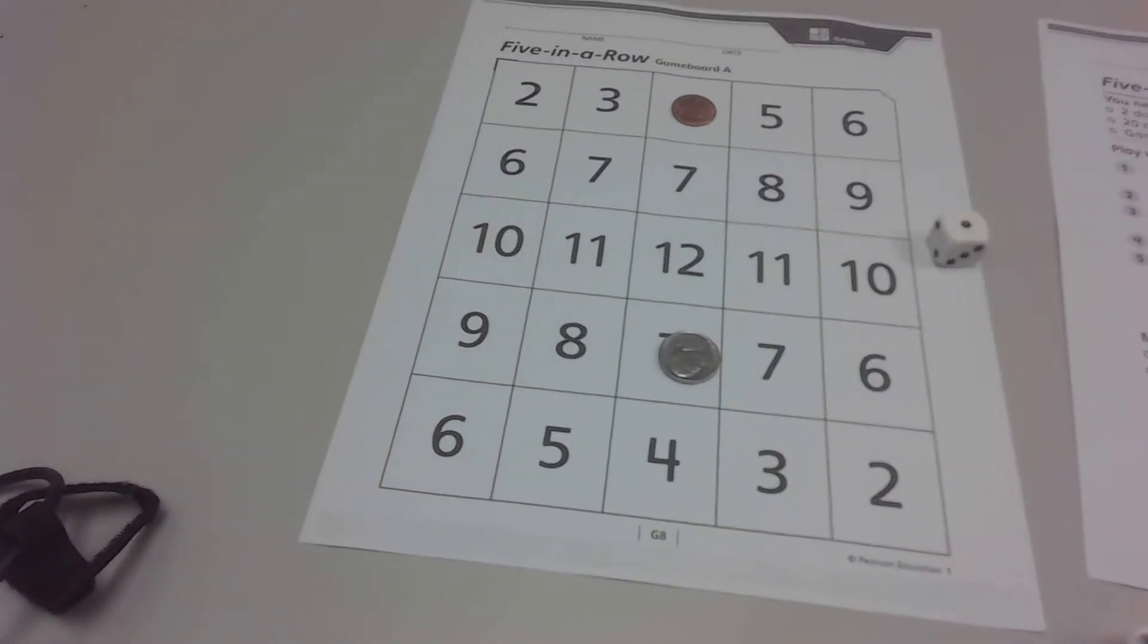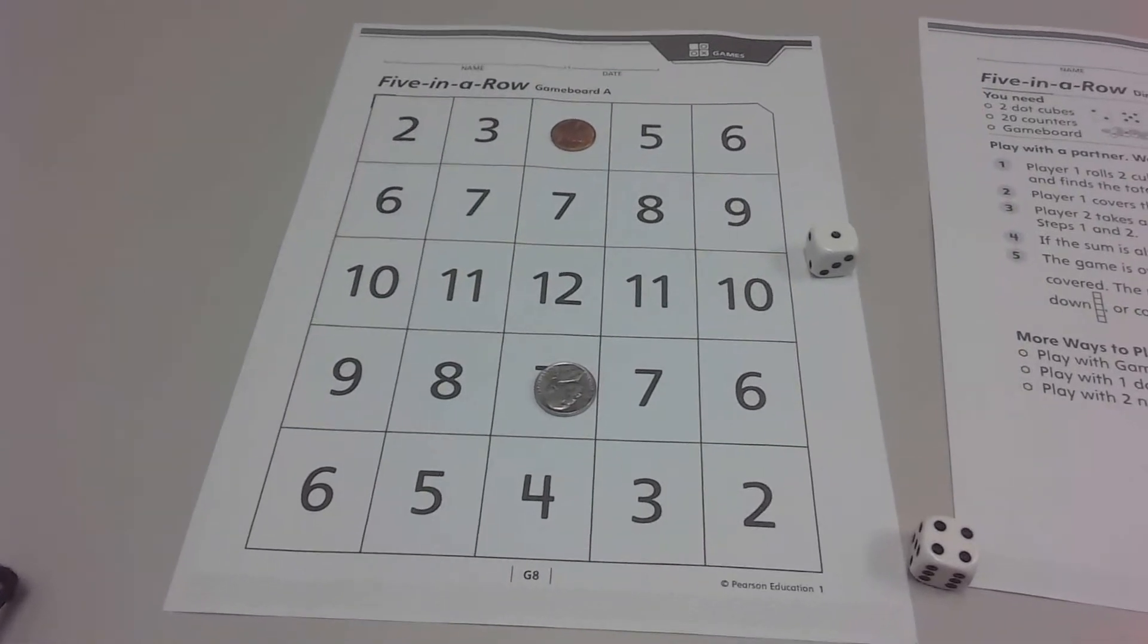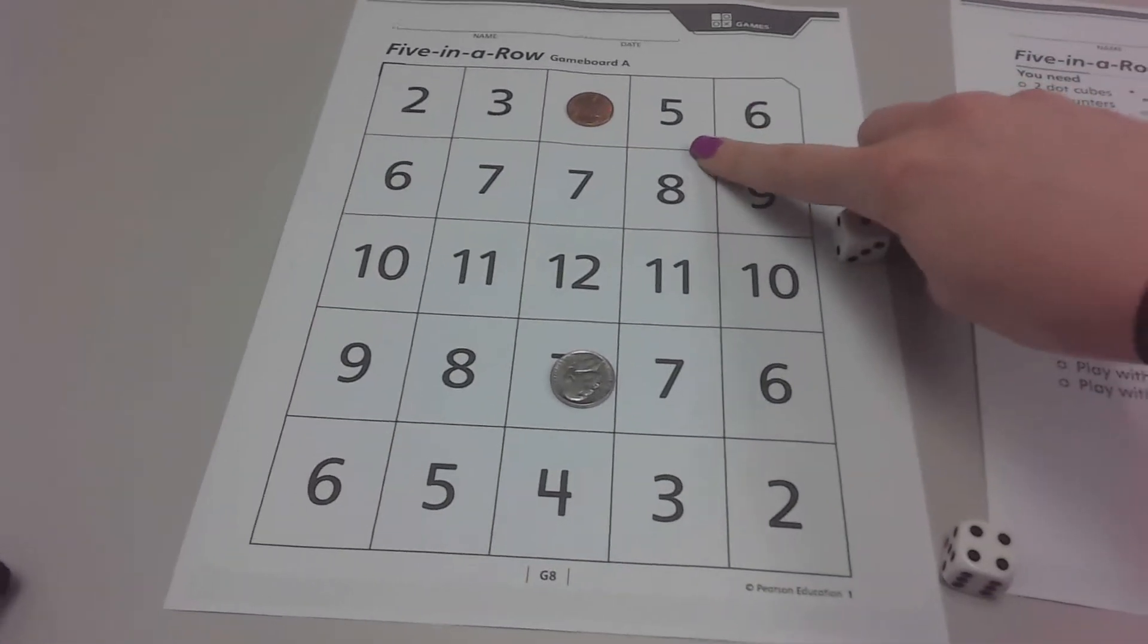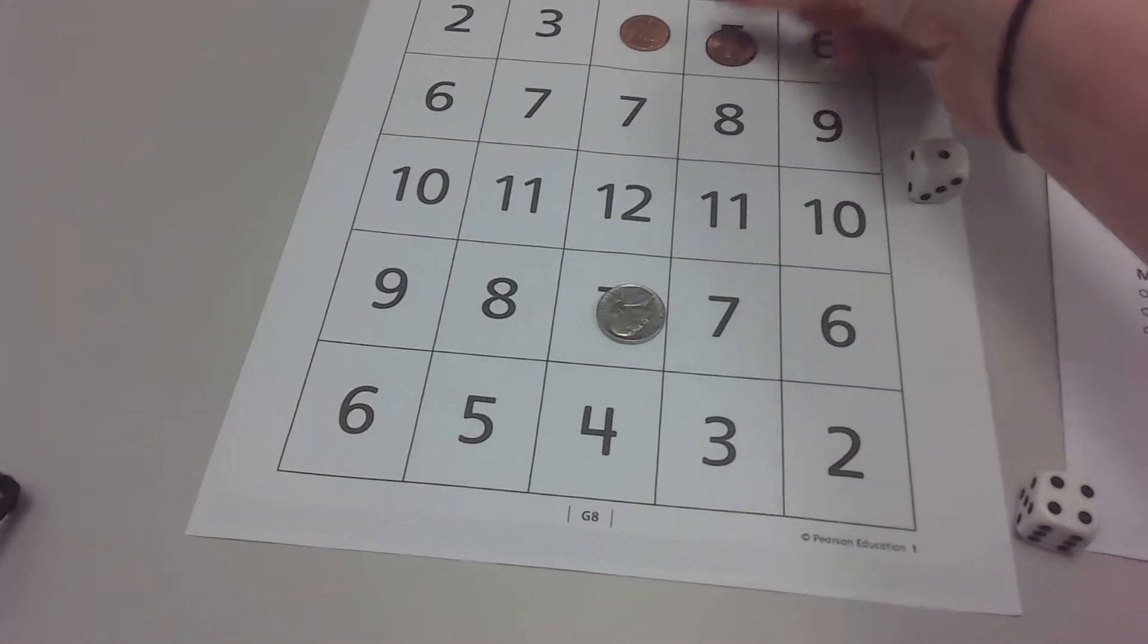Player one goes again. One and four, ooh, five. Look, I have a space up here that's going to continue my seven in a row.